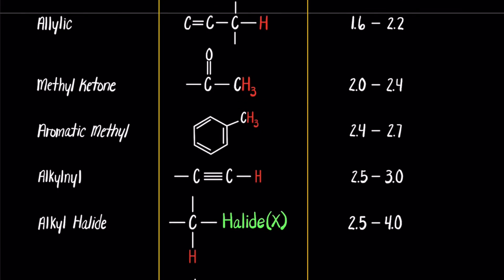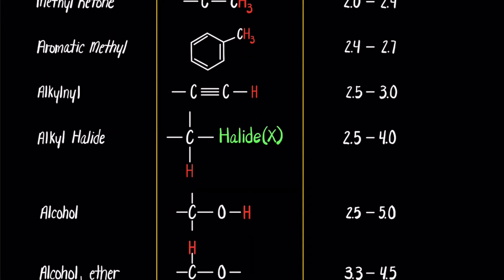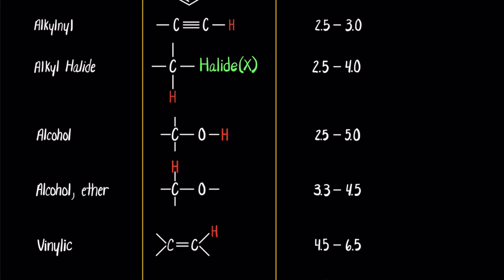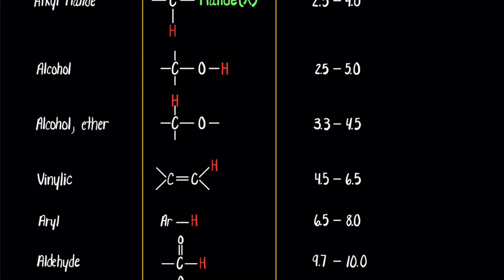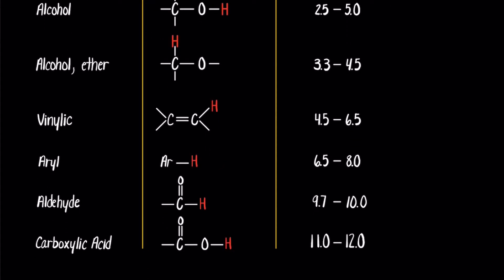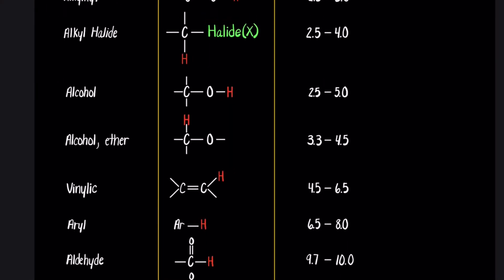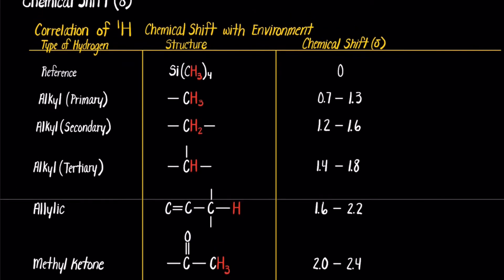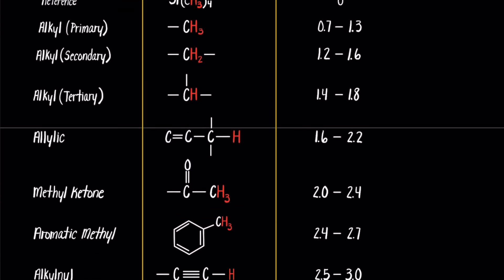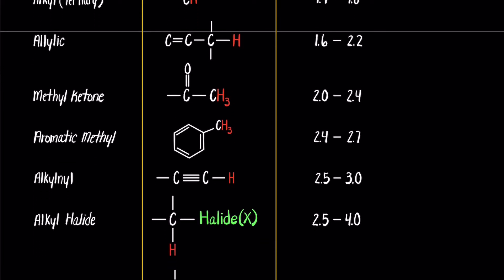The table also lists methyl ketones, aromatic methyls, hydrogens attached to carbons with triple bonds, alkyl halides, alcohols, ethers, vinylic hydrogens, aryl hydrogens, aldehydes, and carboxylic acids. These peaks are all present in your textbook. This table is definitely something that chemistry students should memorize.